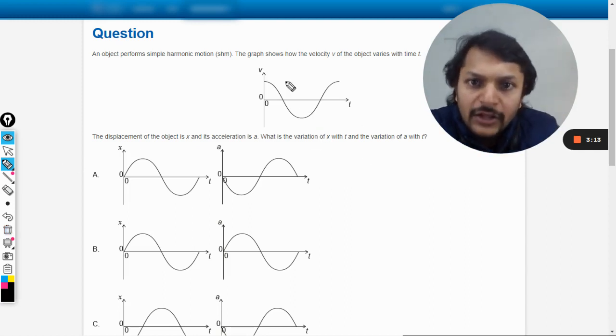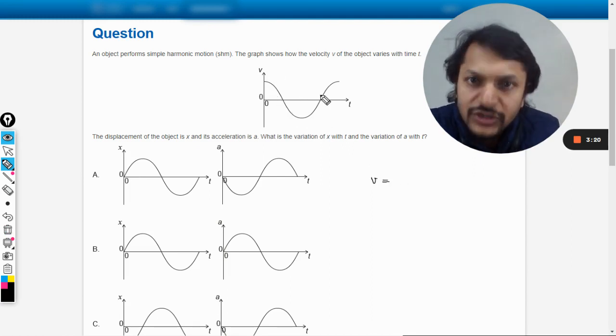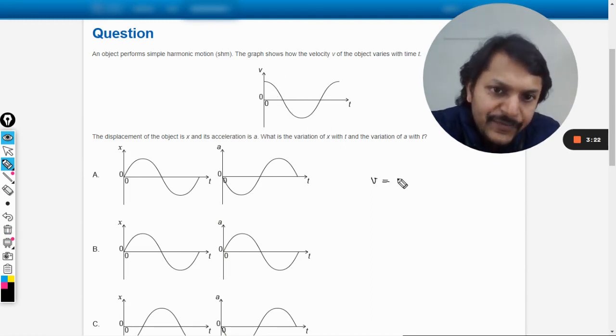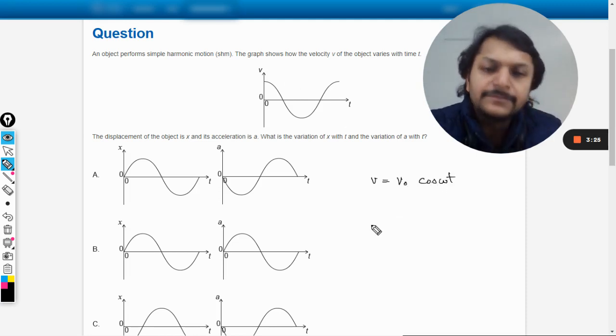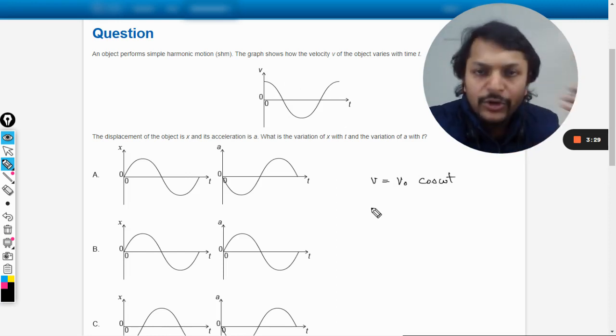Now this is the velocity function, so you can just compare it. Like velocity function is directly proportional to cos theta, so it would be taken as v_naught cos omega t. So we can just extrapolate this thing.